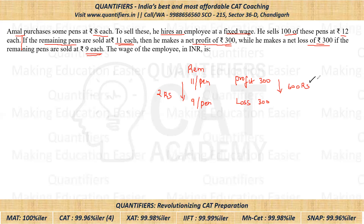You are decreasing two rupees from every pen, and overall there is a decrease of 600 rupees. So from here we can definitely find the number of remaining pens: 600 divided by two — that means the remaining pens are 300. I hope this point is clear to everyone. This is the most important step to solve this question quickly.